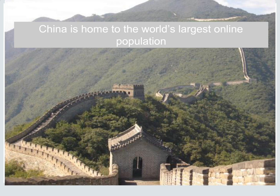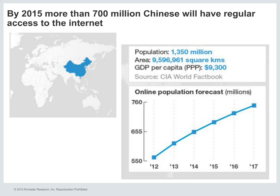When you look at the sheer numbers, the online population in China is absolutely mind-boggling. By 2015, more than 700 million Chinese are going to have regular access to the Internet, and that number is going to grow to 760 million by the end of 2017. So it's really important for any business to think about how they're going to reach and have a presence in China today.